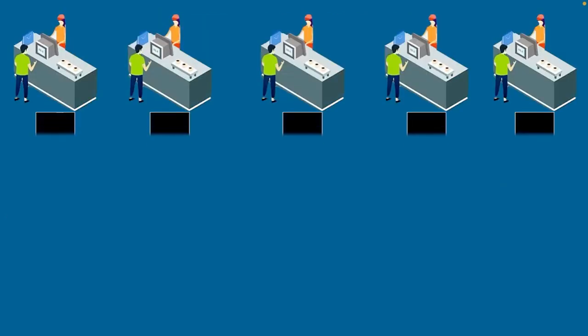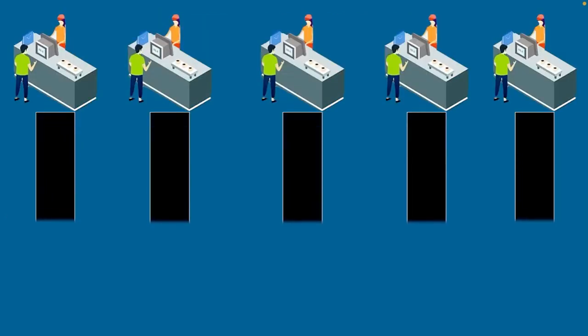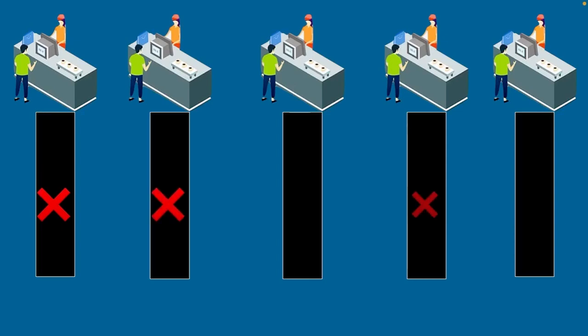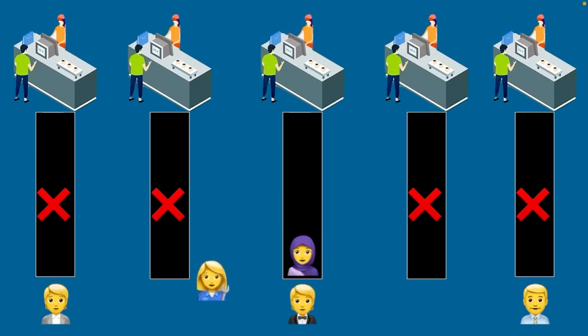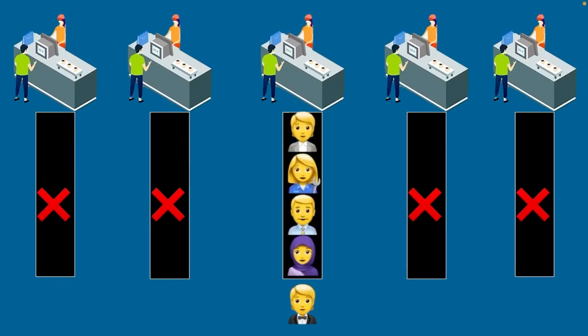Let me give you an example. Let's say a superstore has five checkout lines but only one of them is open. All customers must get into the same line, and therefore it takes a long time for customers to pay their grocery bills. Now imagine the store has opened all five checkout lines — the wait time for customers is about five times shorter.